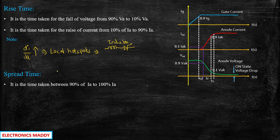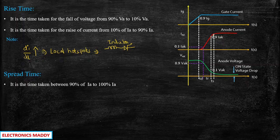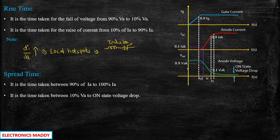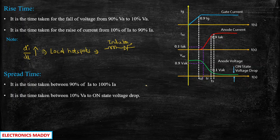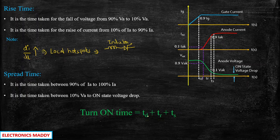Spread time TS is the time taken from 90% of IA to 100% of IA. In terms of voltage, it is the time taken from 10% of VA to the on-state voltage drop. So these are the two definitions for spread time. In conclusion, turn-on time T_on is the sum of delay time, rise time, and spread time.